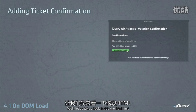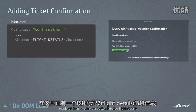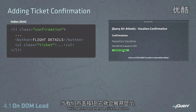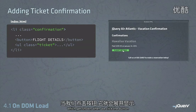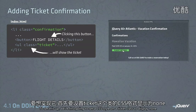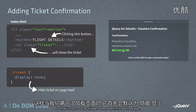Well, let's take a look inside the HTML first. Here is our confirmation list item. Inside of that, we have a button labeled Flight Details, and then we have an unordered list, which has those extra details, which get shown when we click the button. So clicking this button will show the ticket here. To set this up, we're first going to set a CSS style on the ticket class to display none, so that it starts out as hidden when we first load the page.